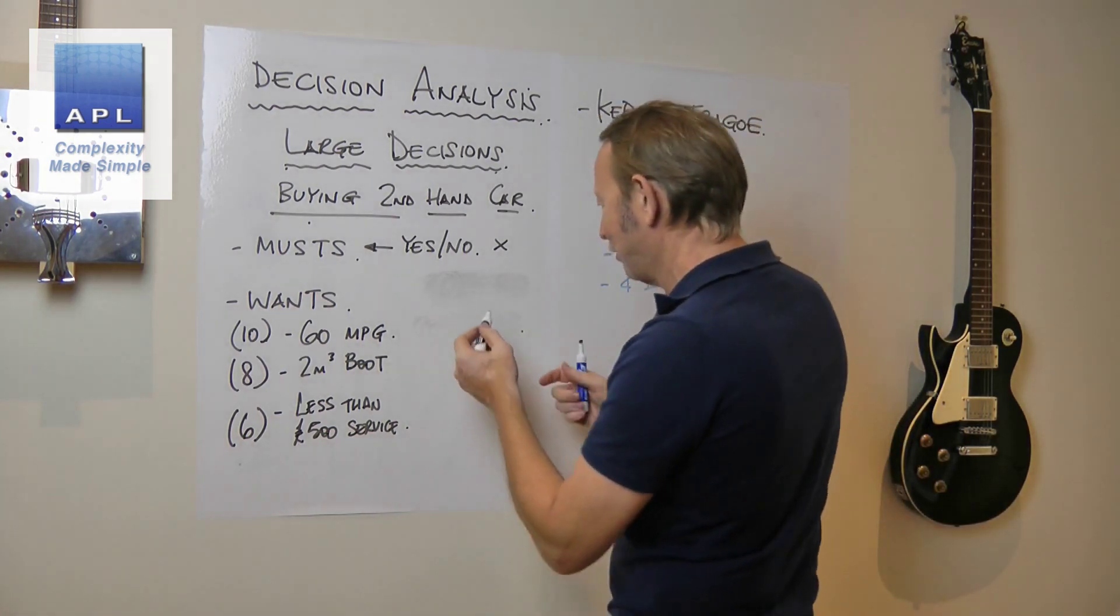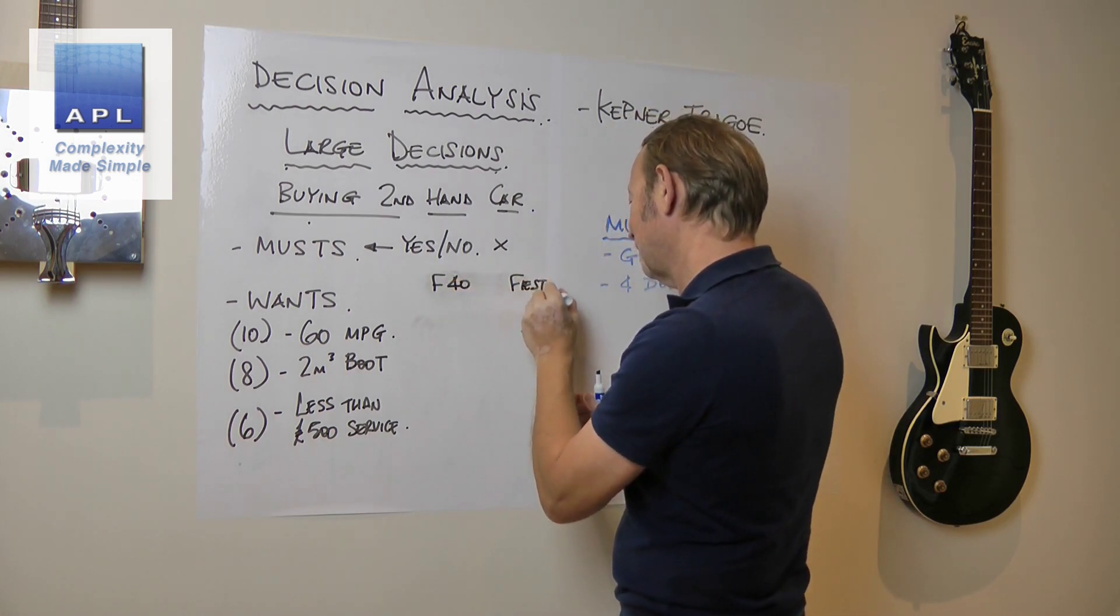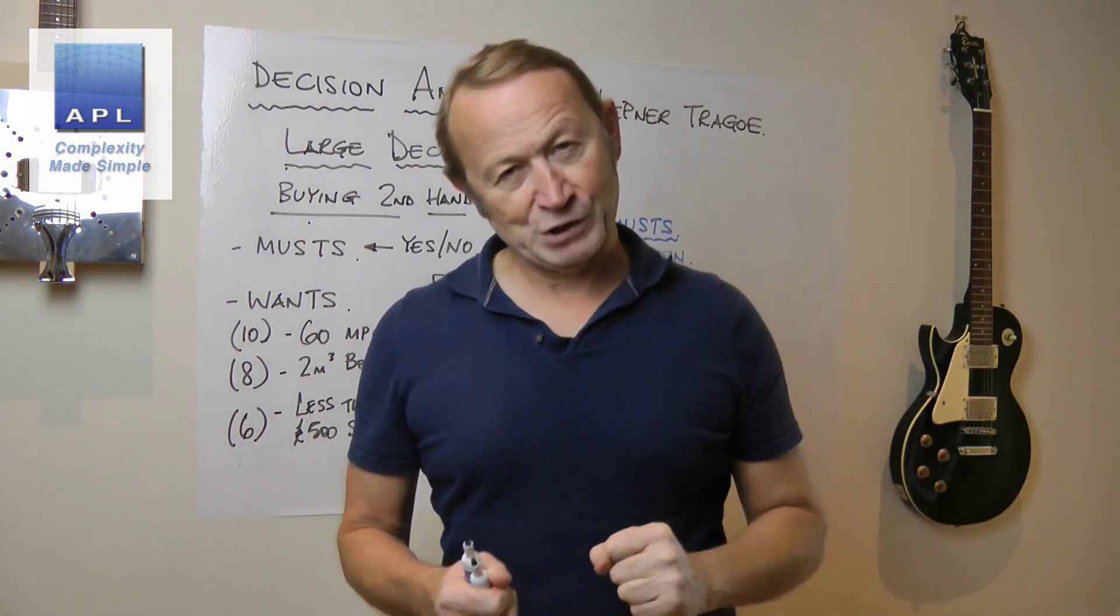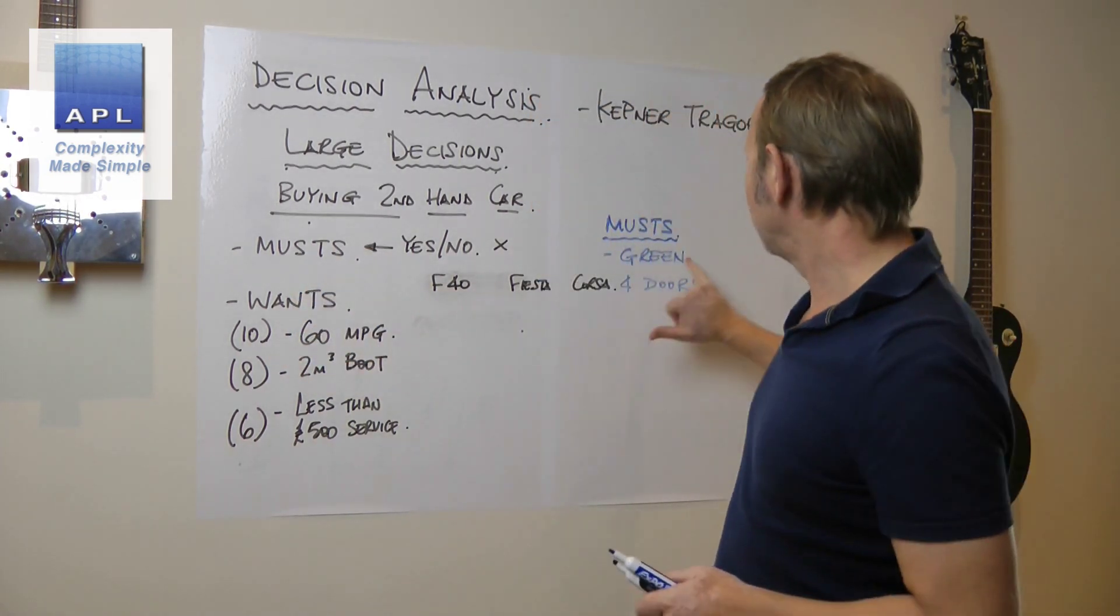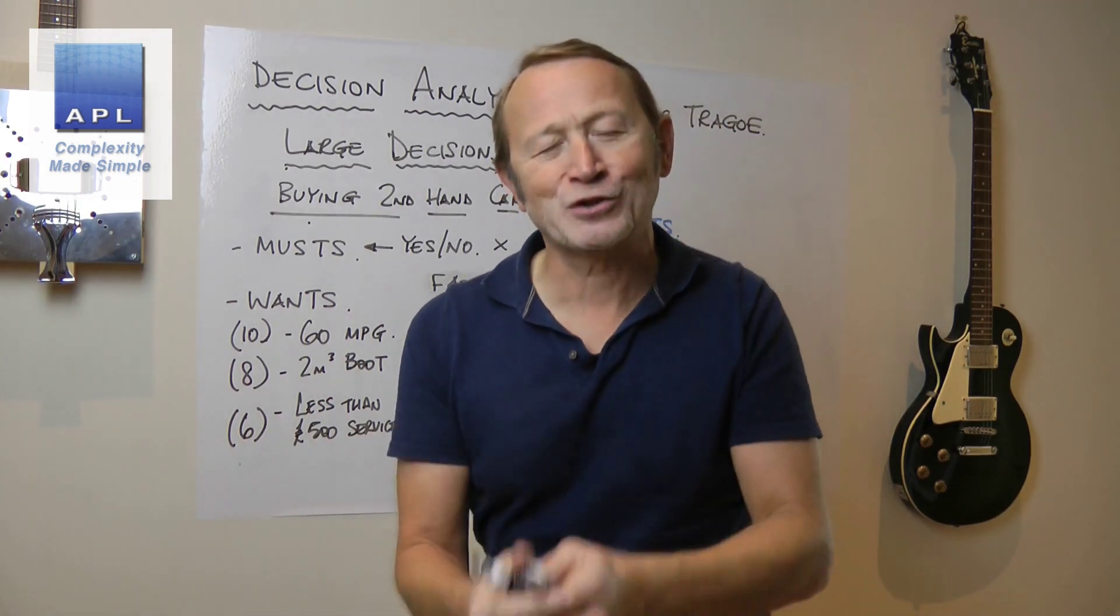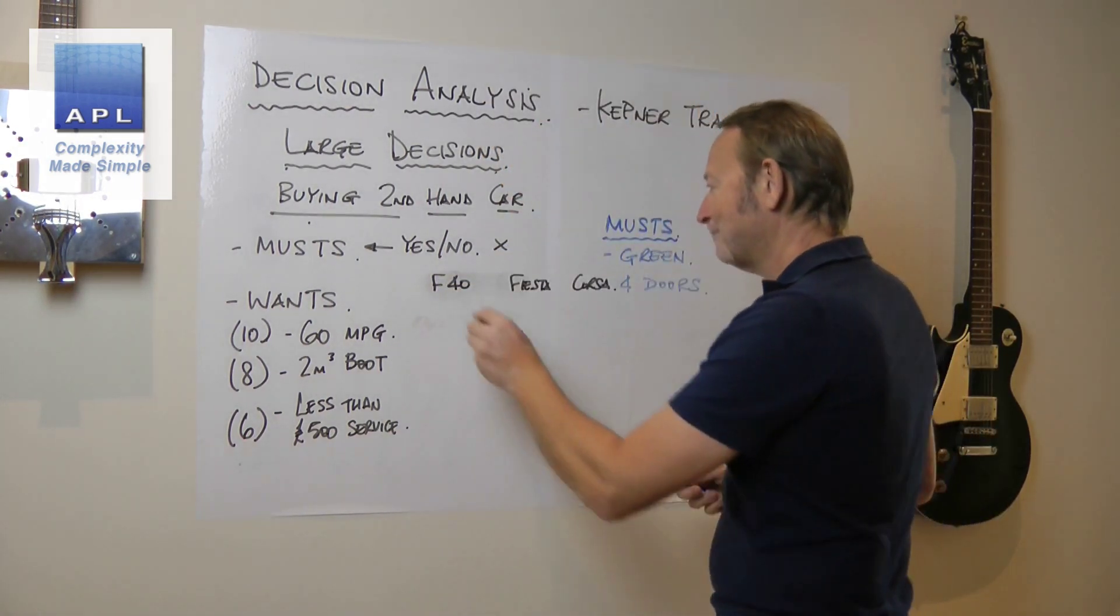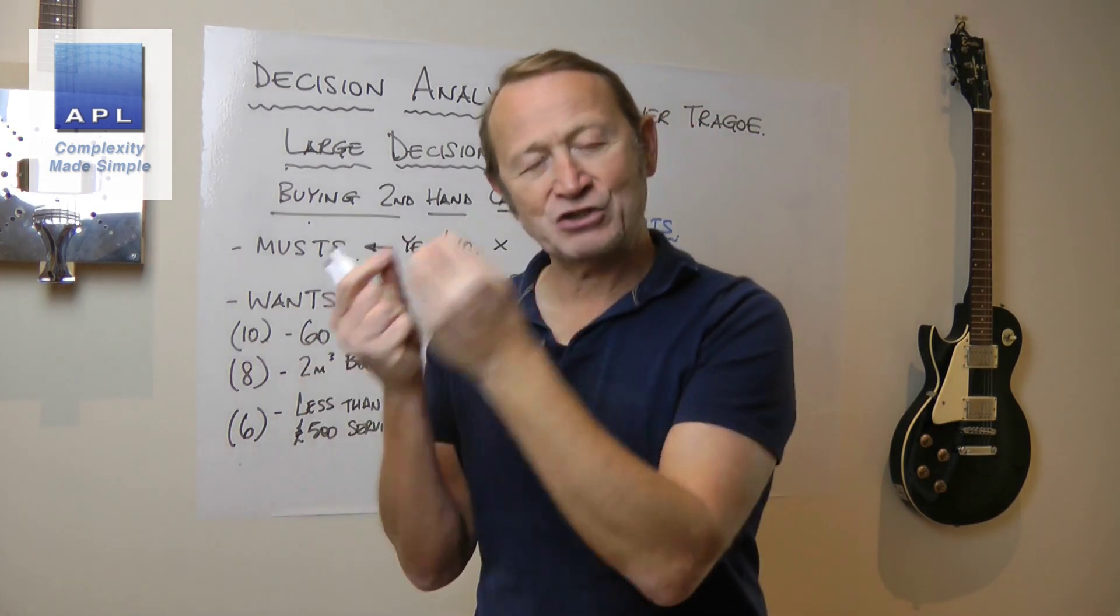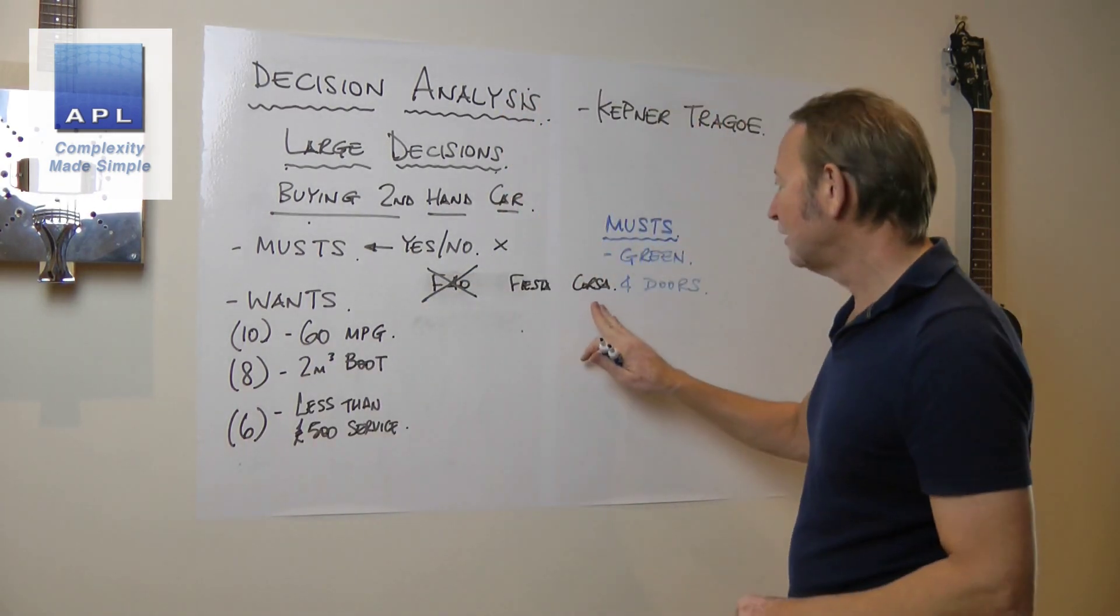Then we go out and find three cars - let's say I find a Ferrari F40, a Fiesta, and a Corsa. The first thing I'm going to do is apply the musts - must be green, must have four doors. Unfortunately, I'm going to have to cross the Ferrari F40 out because the Ferrari is going to be red and it's only going to have two doors. Because of the must requirement, if it's not present, it can't be part of the solution.